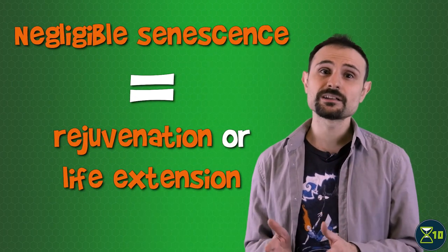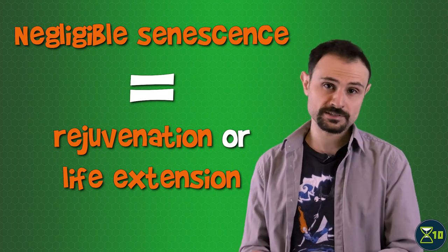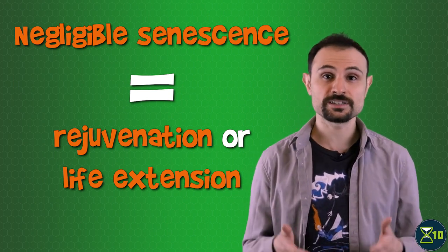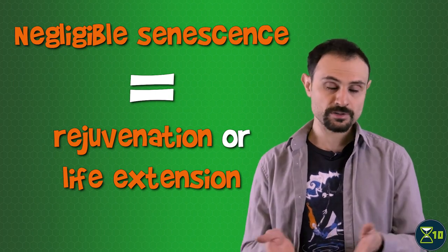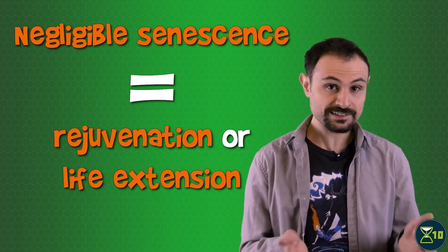The authors of that paper used a large-scale long-term modeling system to predict the effects of negligible senescence on our population, environment, economy, etc. If the term negligible senescence doesn't ring a bell, it's basically another way to say rejuvenation or life extension. More specifically, it refers to a situation in which senescence, that is, the aging of our bodies, has been made negligible, that is, pretty much undetectable.